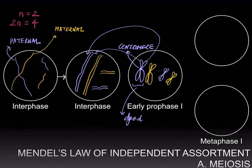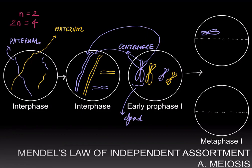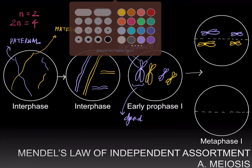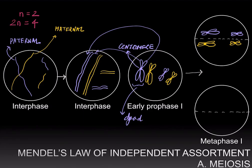Now during metaphase I, these dyads are going to line up on the opposite sides of the metaphase plate. For example, you may have the paternal dyad of the long chromosome lining up here and the paternal dyad of the short chromosome lining up here, whereas the maternal homologs of the long chromosome line up on the bottom side and the maternal homologs of the short chromosomes line up on the bottom side as well.